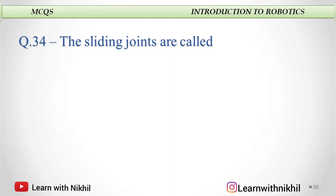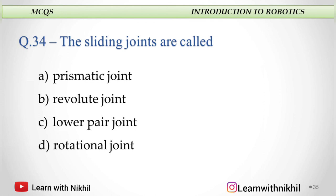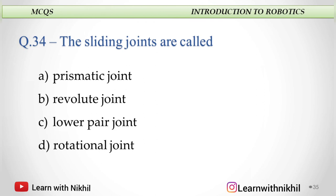Next: The sliding joints are called — prismatic joint, revolute joint, lower pair joint, or rotational joint? The answer is prismatic joint.